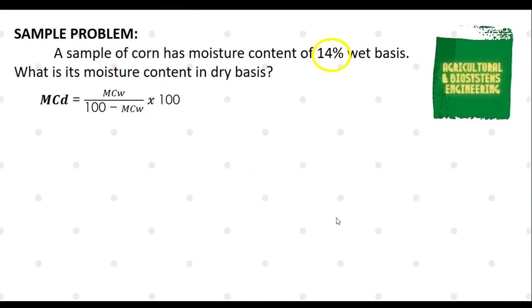The only given in the problem is 14% Moisture Content Wet Basis. With this, we can now solve for its Moisture Content Dry Basis. We simply substitute to the formula. We now have 14 all over 100 minus 14, multiplied to 100. The final answer is 16.28%.